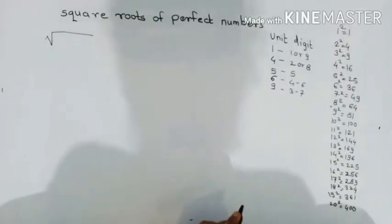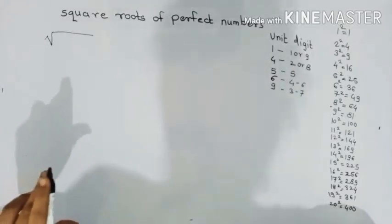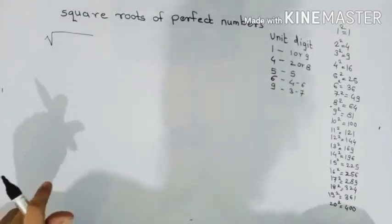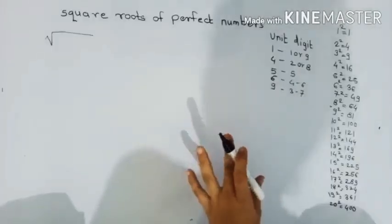Hello everyone, today's topic is how can I find square roots of perfect numbers. What we need to do first is learn from 1 to 20 squares in the small class.